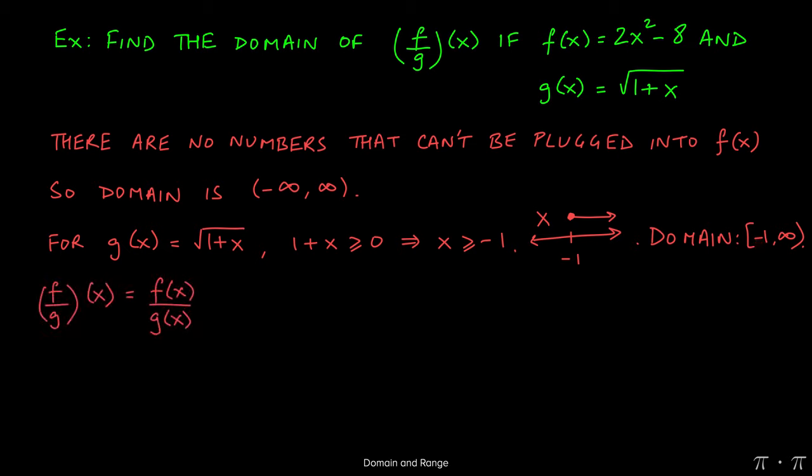Now hopefully you remember that f over g of x is simply the quotient of the two given functions f of x and g of x. And if I write it as such, I get my equation as 2x squared minus 8 all over the square root of 1 plus x.